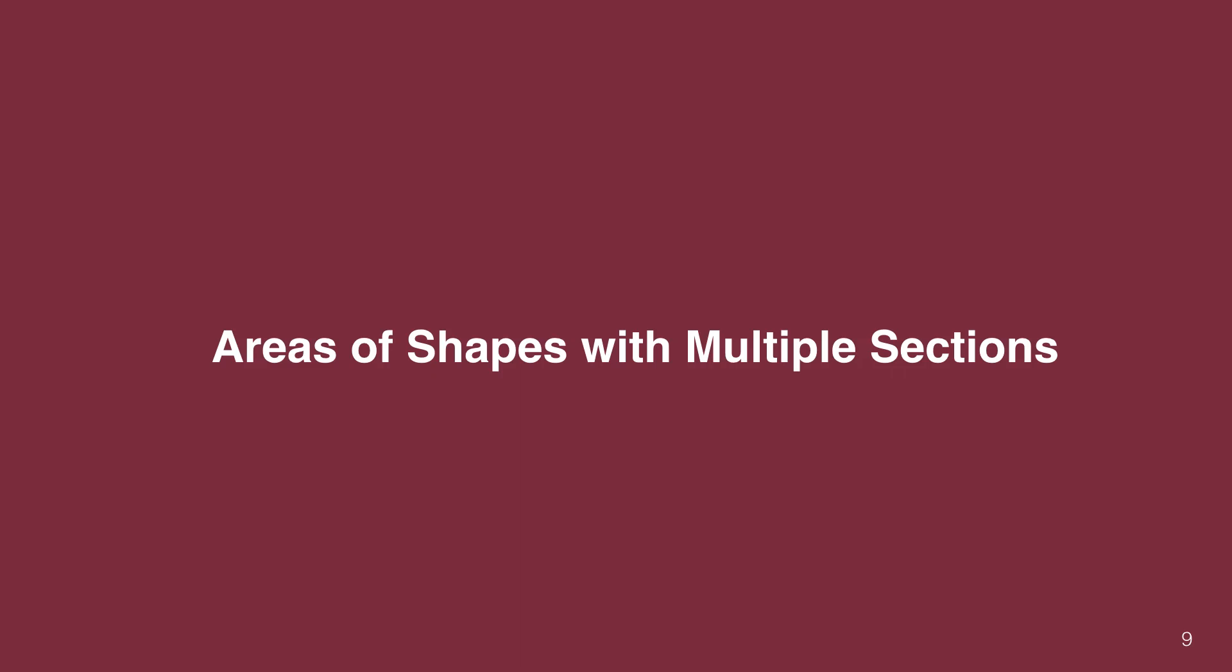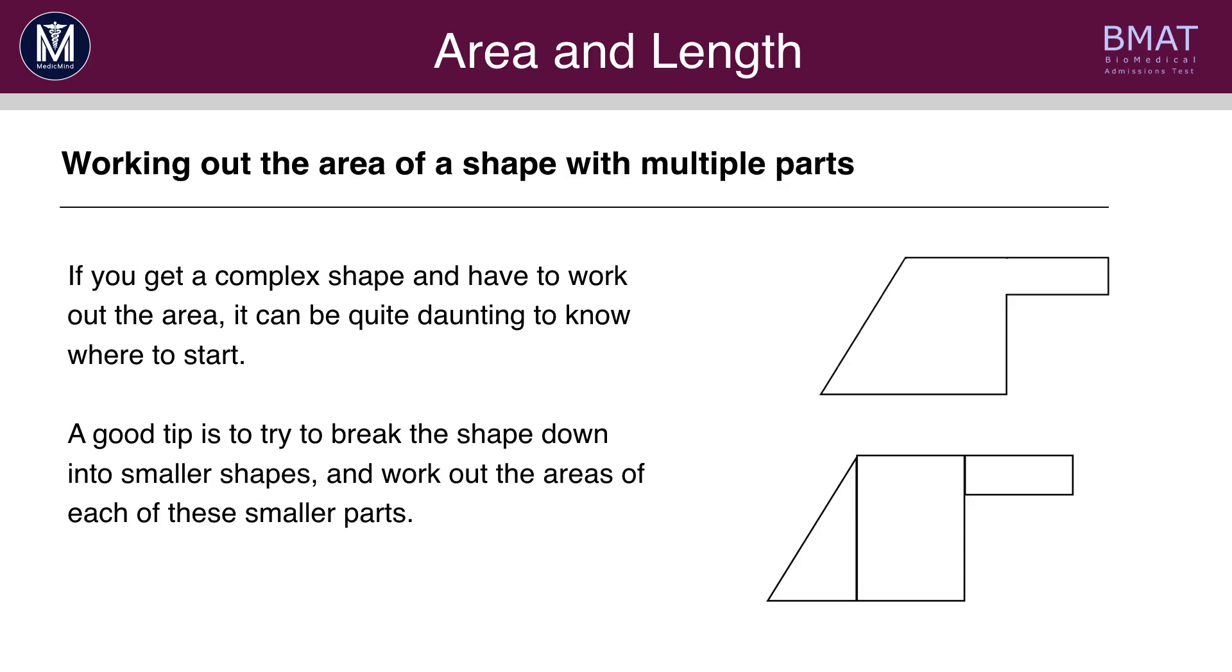Sometimes, you'll get questions where they have shapes with multiple sections, and you'll have to break down the shape yourself. For example, you might get the shape at the top, and be asked to work out the area. To work out the area of this shape, you need to draw lines in yourself, and break it down. In this case, by drawing two lines, you can break this shape down into a triangle and two rectangles.